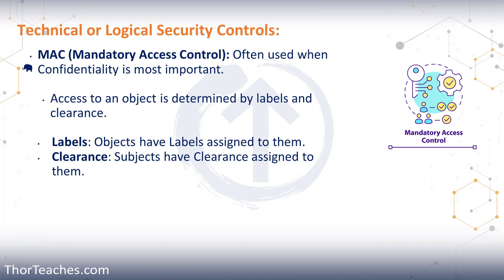Next up, we have MAC — Mandatory Access Control. You can tell from the name, this is more serious. It's mandatory. Here, confidentiality is most important, and access to objects is determined by labels and clearance. Subjects have clearance, objects have labels, and subjects can manipulate objects.